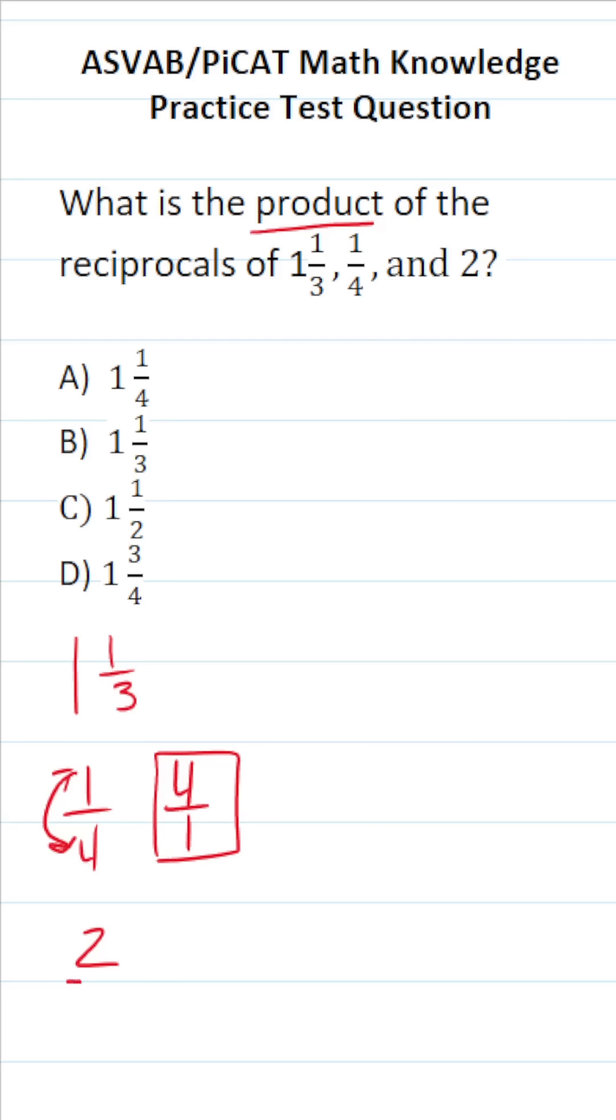I could write 2 as a fraction by placing it over 1. Again, to find its reciprocal, we're just going to flip-flop our numerator and denominator. So the reciprocal of 2, which is the same thing as 2 over 1, is going to be 1 over 2. I'm going to put a box around it so I remember that that is the reciprocal.